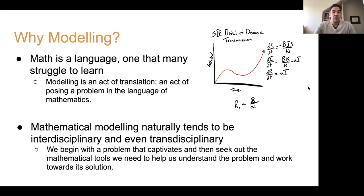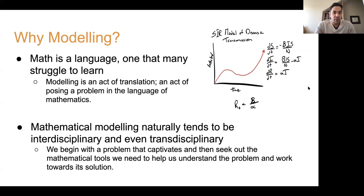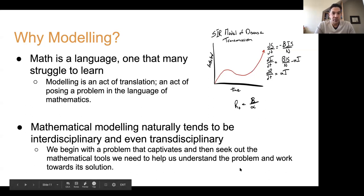The other reason mathematical modeling is important is because it's grounded in the real world. It tends to be interdisciplinary and transdisciplinary because it's grounded in the real world — the idea of modeling is to solve real-world problems. The origin of this project came from exactly that: what happens when you put a biomathematician and an architect in a room together? Well, they came up with this.